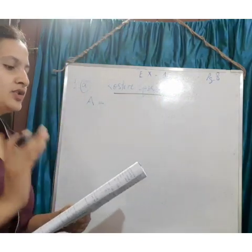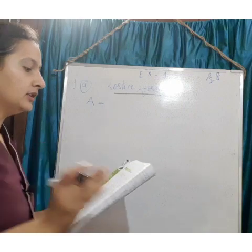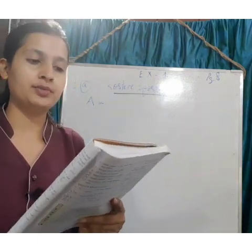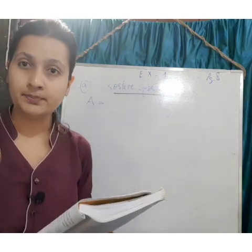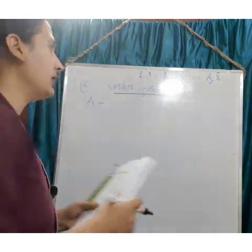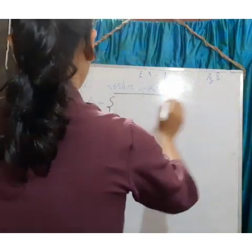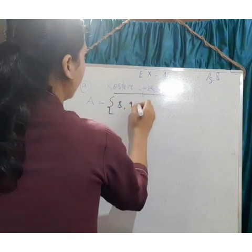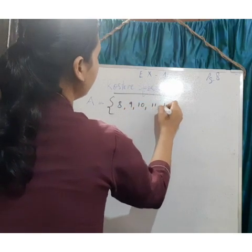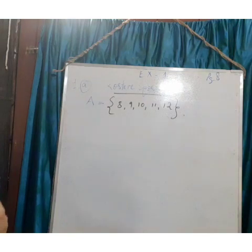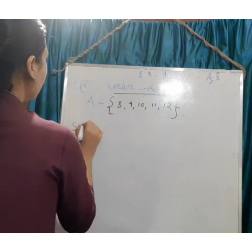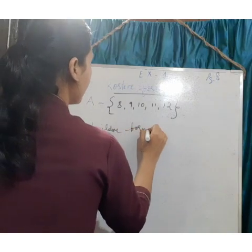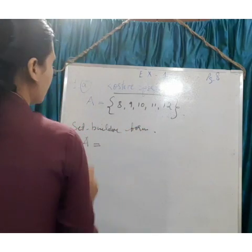Natural numbers start from 1. We have to write all natural numbers which are more than 7 but less than 13. So we write: 8, 9, 10, 11, 12 — and these are less than 13. This is your roster form.